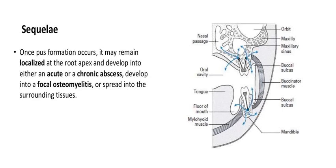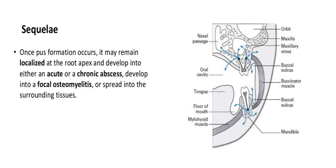After pus formation, we need to consider the fate and sequelae of the abscess. Will it be localized at the tooth apex, become an acute or chronic abscess, or progress to focal osteomyelitis? The pus can spread to form cheek or vestibular swelling in the upper jaw, extend into the maxillary sinus or onto the palatal surface. In the lower jaw, it might lead to submandibular, sublingual, vestibular, or buccal abscess — all depending on the anatomical site of origin.